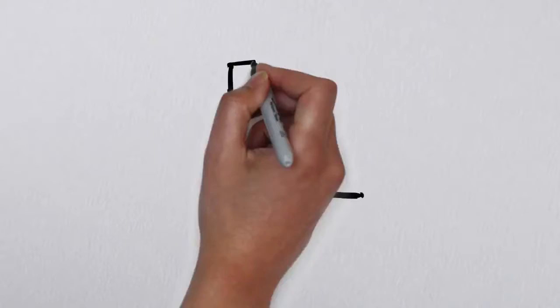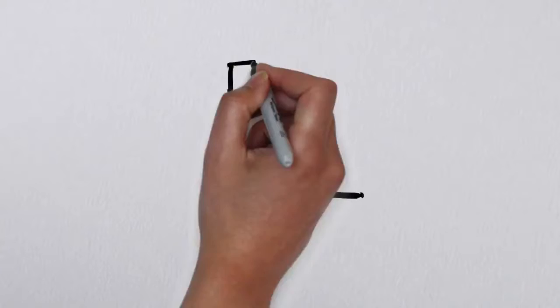My book, The Reluctant Leader: Own Your Responsibility With Courage, is now available at Amazon.com.